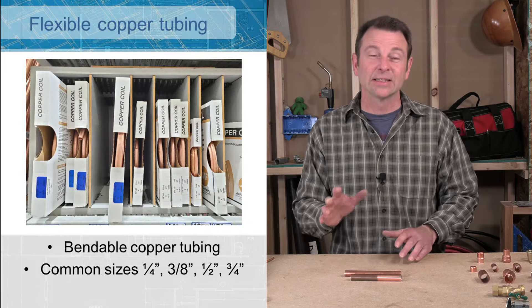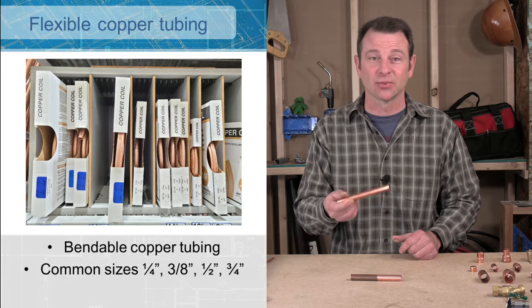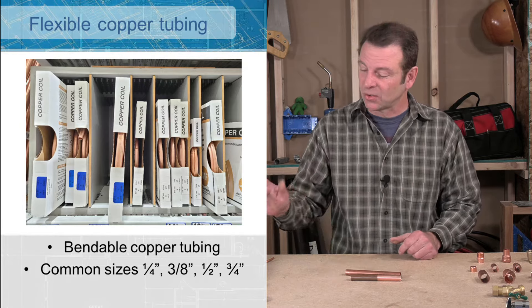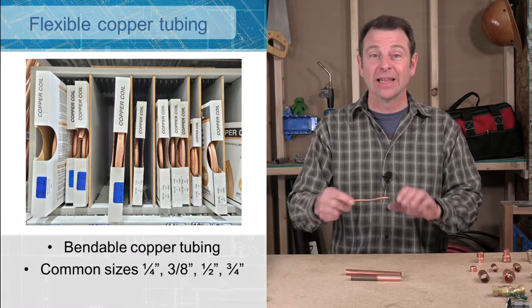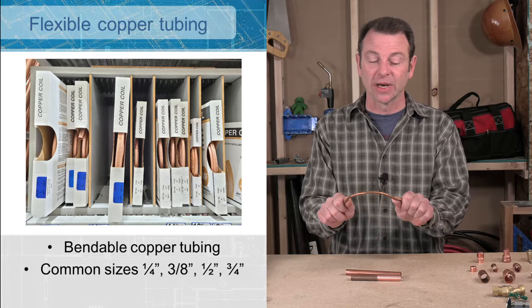All of this lesson is about rigid copper pipe. That is pipe that we're not bending. We're using it in straight runs. There's another whole category of copper pipe that is bendable. This is a softer copper and it can be bent in different directions.